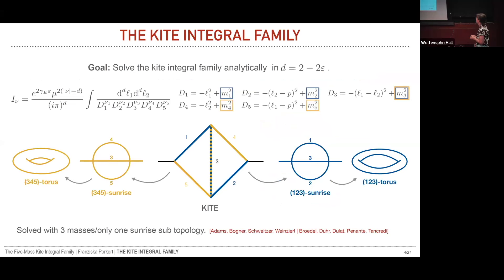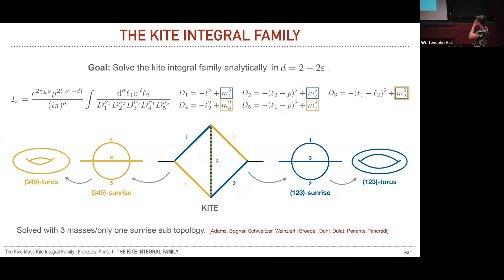In this talk, you will see how parametrizing all five kinematic parameters on the torii helps us obtain a solution, as it allows us to use the properties of these geometries. We assume these ideas might also be applicable to other cases with multiple geometries or many parameters. But first, let me introduce the kite integral family in more detail. It's defined by a scalar diagram where every propagator has a generic mass, and we denote the propagators by the numbers of the masses.